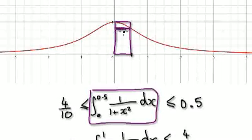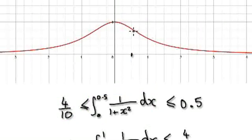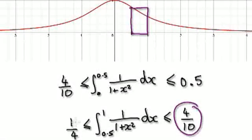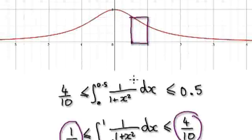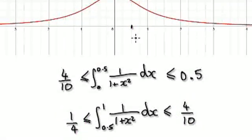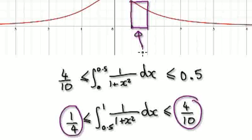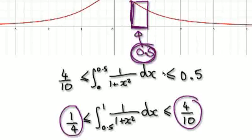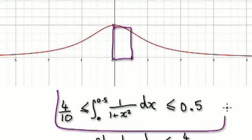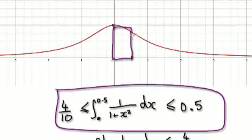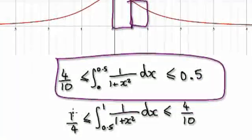The lowest possible value that this could be is right here. You have to get this height times the width, and that gives you this. In this region, the highest that this could be is four over ten, and the lowest that this could be is a quarter. Press pause and really think about this if you want to. Just remember that when you cut in half, the width is a half, so when you get the height, you've got to multiply it by a half.